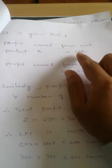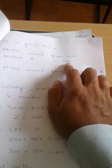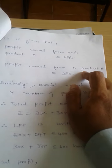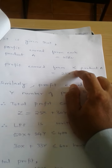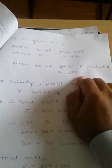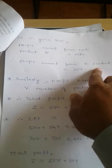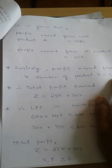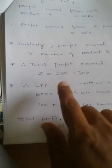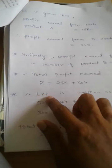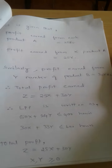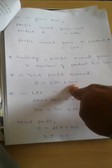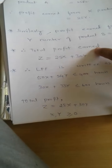If the organization sells one product A, the profit is 25 rupees. Since X units of product A are manufactured, the total profit from A is 25X. Similarly, the profit from Y units of product B is 30Y. Therefore, the objective function is Z = 25X + 30Y, which represents the total profit. This is the complete LPP formulation.